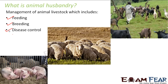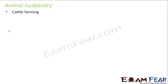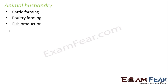Human beings have always been the smartest of all animals, and at the same time quite selfish as well. Since human beings derive so many food materials from animals, they have started taking care of those specific animals in a very special way. We will talk about those categories under animal husbandry — cattle farming, poultry farming, fish production, and beekeeping.